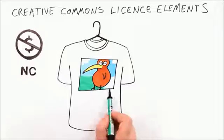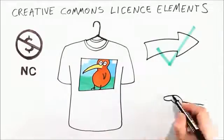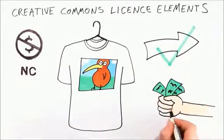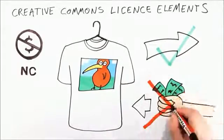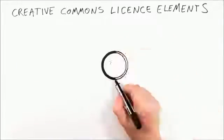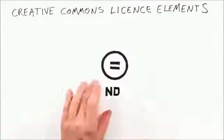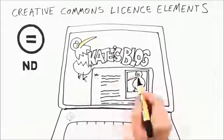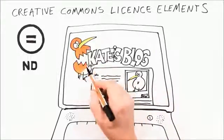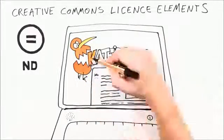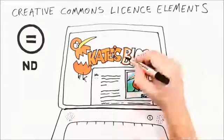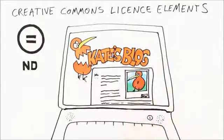Tim wants to print the photo onto t-shirts and distribute them to friends. He can do this, but he must not sell them. This is No Derivatives, and it means that Kiri hasn't given permission to change her photo. Kate can use CC Kiwi on her design blog, but will need to ask Kiri before retouching or mixing up the image.